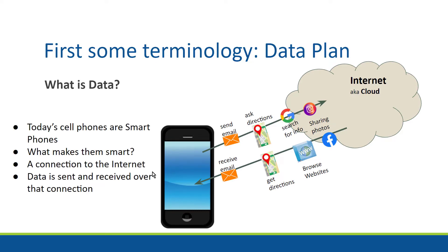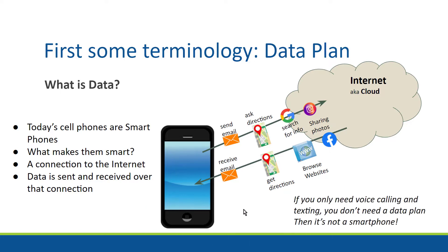Today's cell phones are smartphones. What makes them smart? A connection to the Internet. Data is sent and received over that connection. If you only need voice calling or texting, you don't even need a data plan. But then it's not a smartphone — it's just a phone.